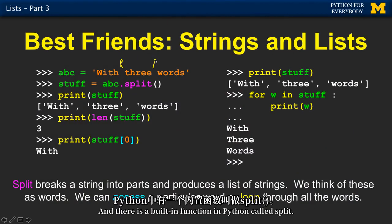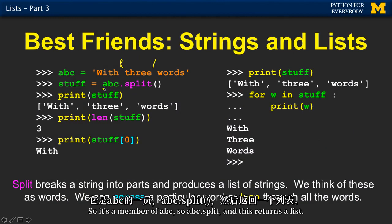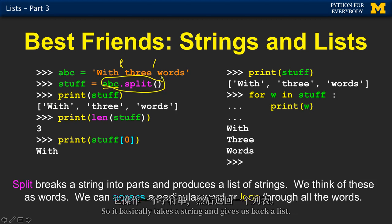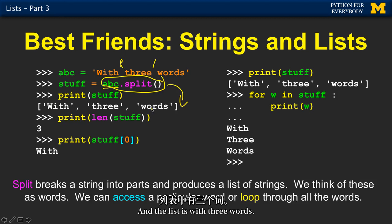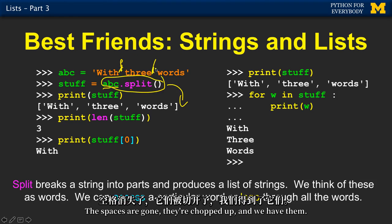There is a built-in function in Python called split. It's a member of abc, so abc.split. This returns a list - it basically takes a string and gives us back a list. The list has three words, the spaces are gone, they're chopped up.